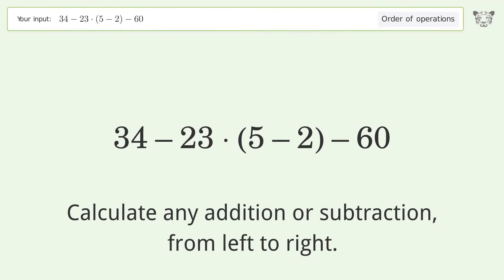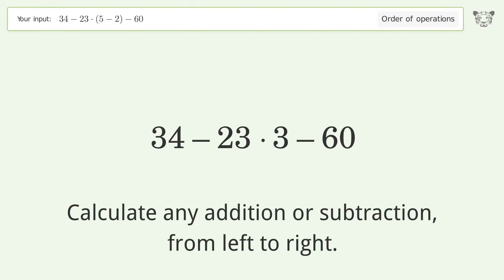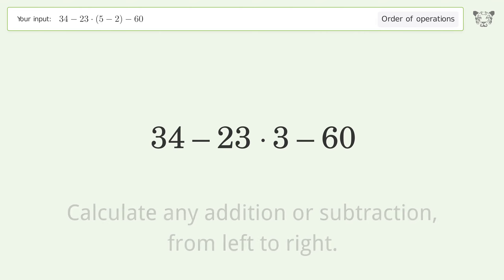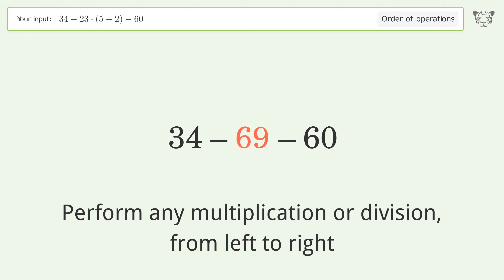Calculate any addition or subtraction from left to right: 5 minus 2 equals 3. Then perform any multiplication or division from left to right: 23 times 3 equals 69.